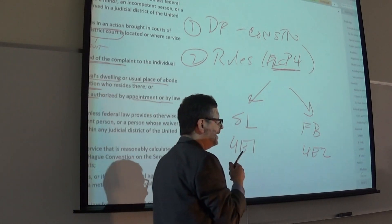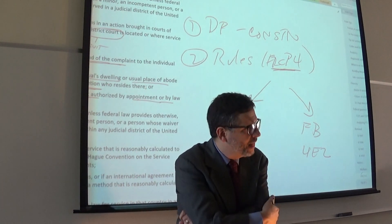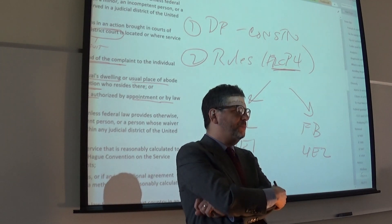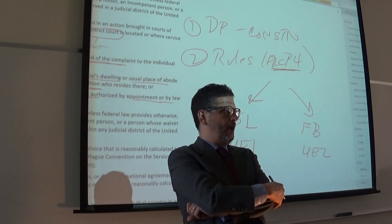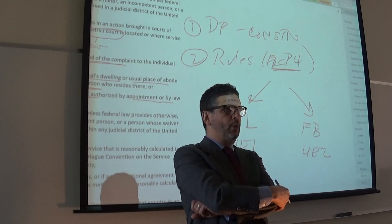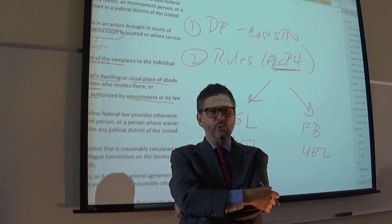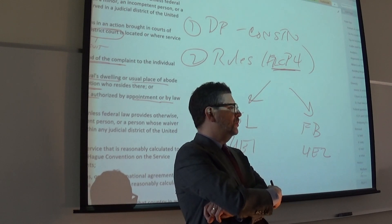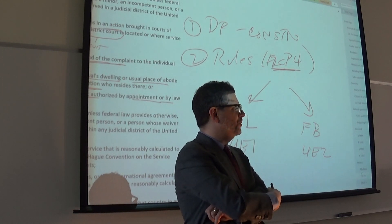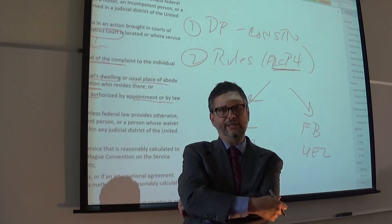Beyond that, I'm not going to get into details — Rule 4 is big and we talked about it in class. Rules 5 and 6 I'll note only briefly. Rule 5 is for service of papers done after the initial summons and complaint — for example, things like answers, motions, discovery requests, and discovery responses — and they have a much longer list of bases for service. Rule 6 is for timing of service. For example, if you have 21 days to answer a complaint but the last day falls on a Sunday or a holiday, then the response would be due on the next day that's not a Sunday or a holiday.